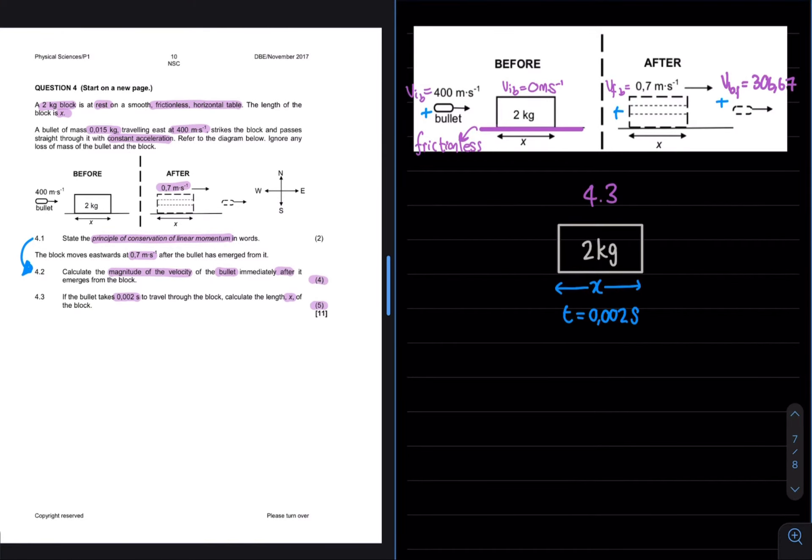If we look at the information surrounding the block and bullet system, we can see that we have the initial velocity of the bullet before it enters the block is 400, and the final velocity when it exits is 306.67.